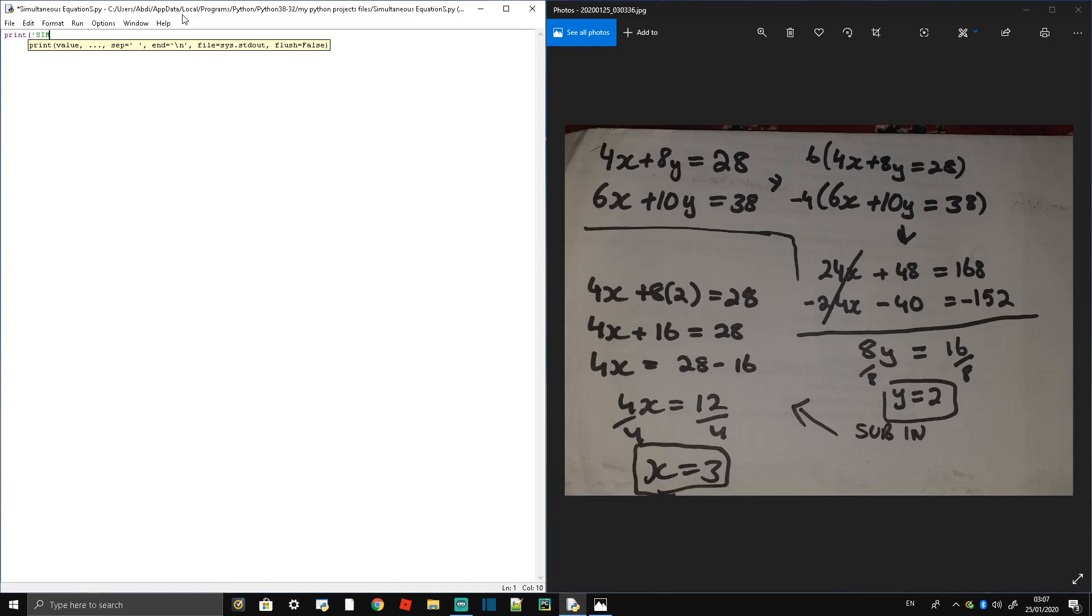The example equations we're using in this one are 4x plus 8y equals 28 and 6x plus 10y equals 38. Solving it manually, we know x equals 3 and y equals 2.